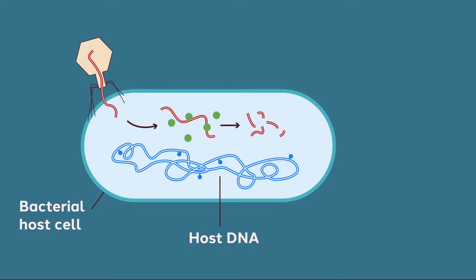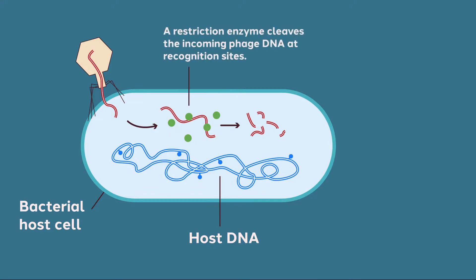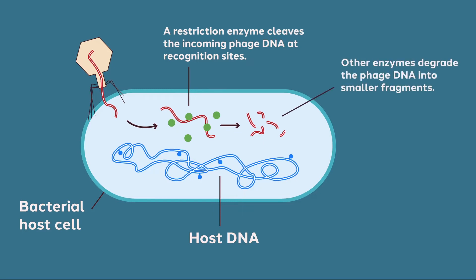One of these mechanisms is the restriction and modification system. There are two important parts to this system. The first is the restriction enzyme. In order to defend themselves from the bacteriophage, bacteria have evolved sequence-specific DNA endonucleases. As you can see in this diagram, the restriction enzyme cuts the bacteriophage DNA into small fragments, preventing the bacteriophage from replicating.